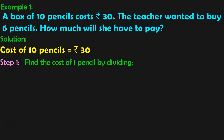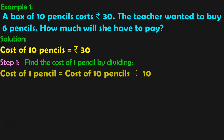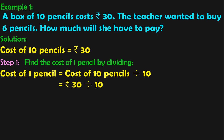Step 1: Find the cost of 1 pencil by dividing. Cost of 1 pencil is equal to cost of 10 pencils divided by 10. We know that the cost of 10 pencils is Rs. 30, so Rs. 30 divided by 10. What is 30 divided by 10? It is 3. So, cost of 1 pencil is Rs. 3.